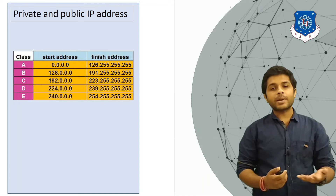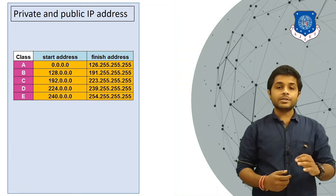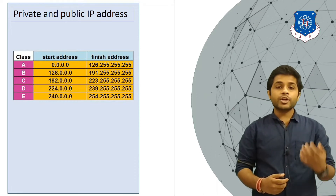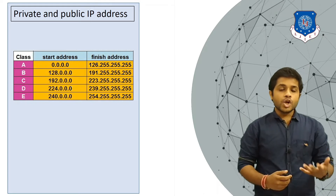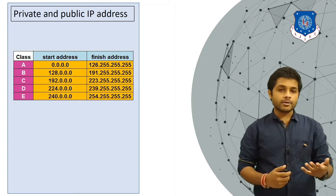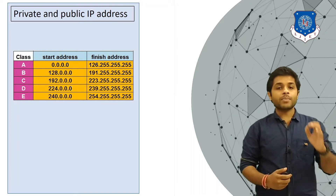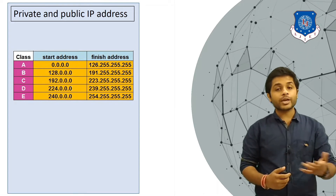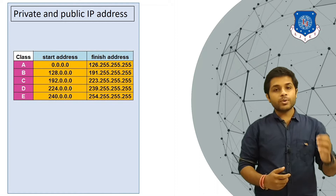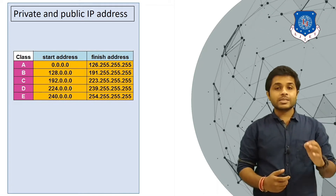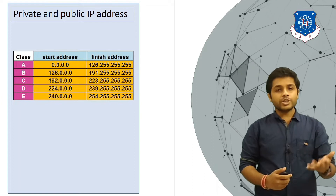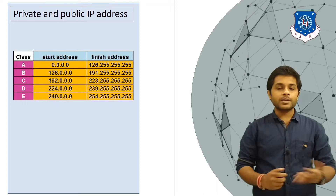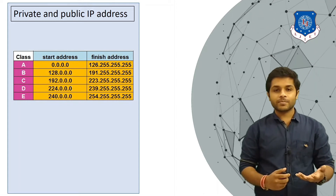Public IP addresses are those using which you can access and communicate over the internet. When you purchase a plan from your internet service provider, they assign you one public IP address so you can connect over the internet. If you have a private IP address, your device cannot communicate over the internet, but it can communicate over the local area network, and you don't have to pay anything to use a private IP.